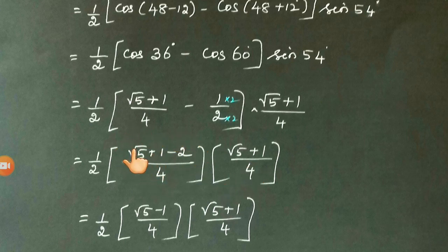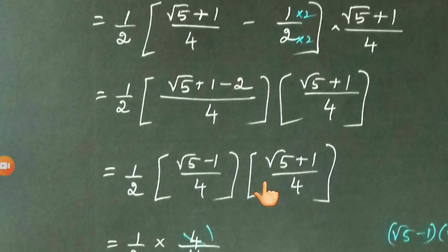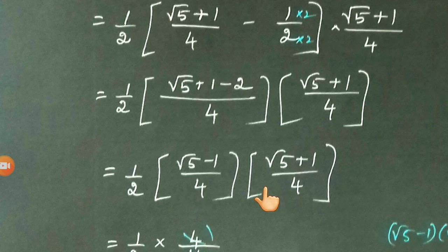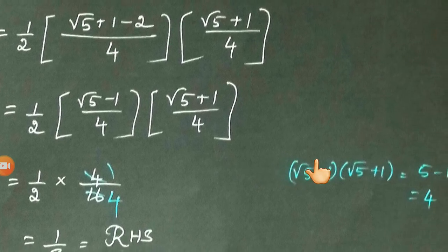If you simplify, in the numerator we have √5 and 1 minus 2 is -1. So we have (√5 - 1)/4 × (√5 + 1)/4. Now this is of the form (a - b)(a + b), that is a² - b². That is (√5 - 1)(√5 + 1).